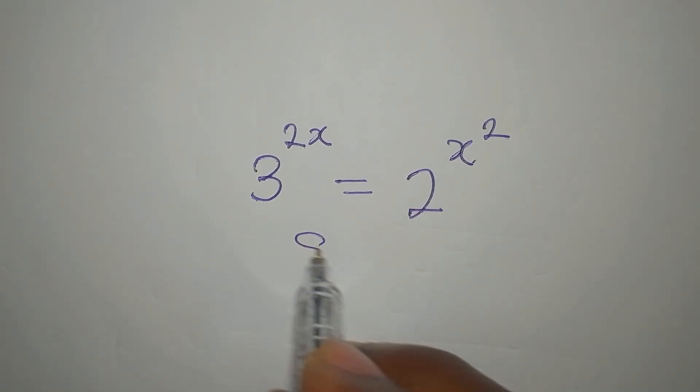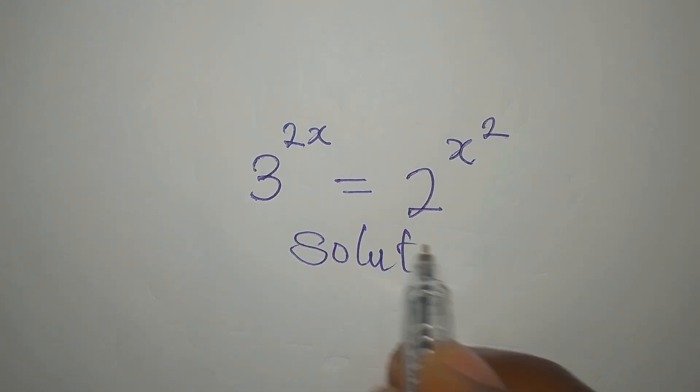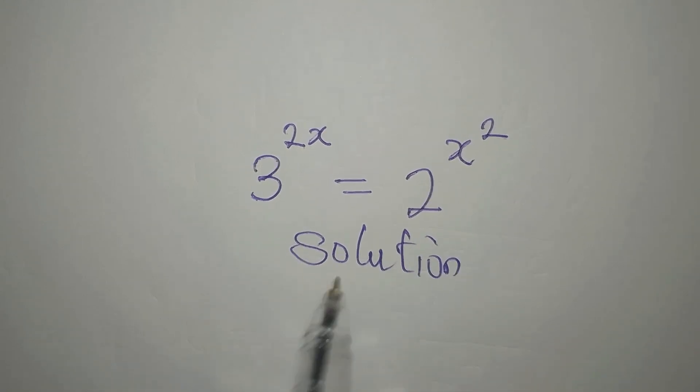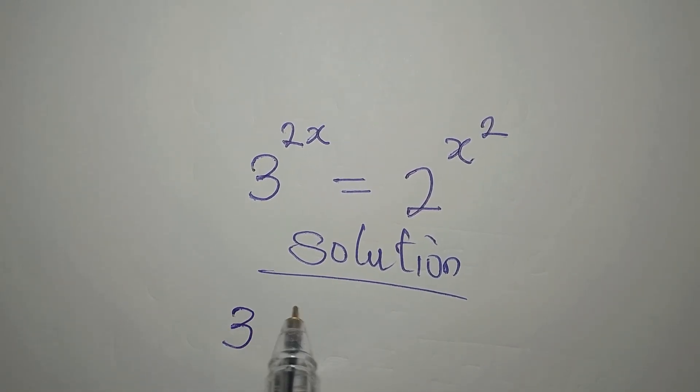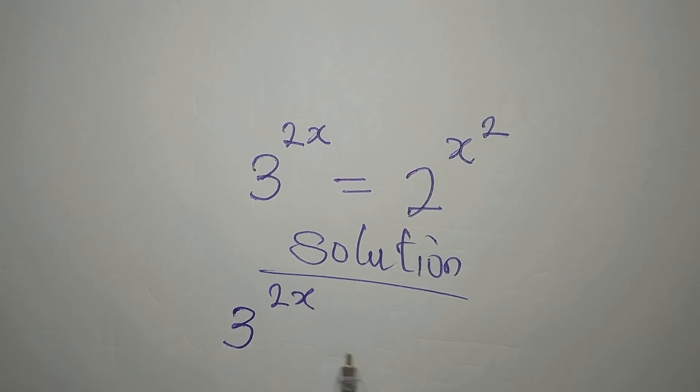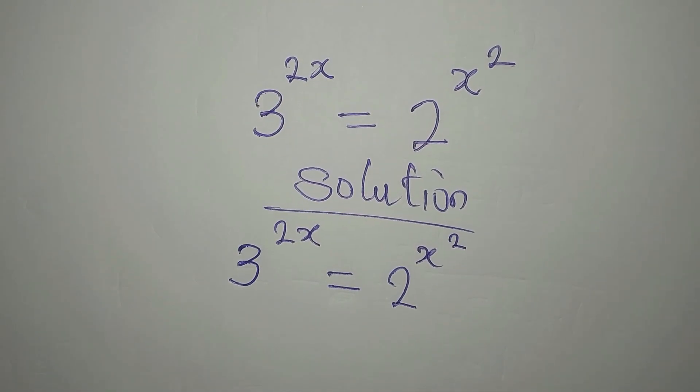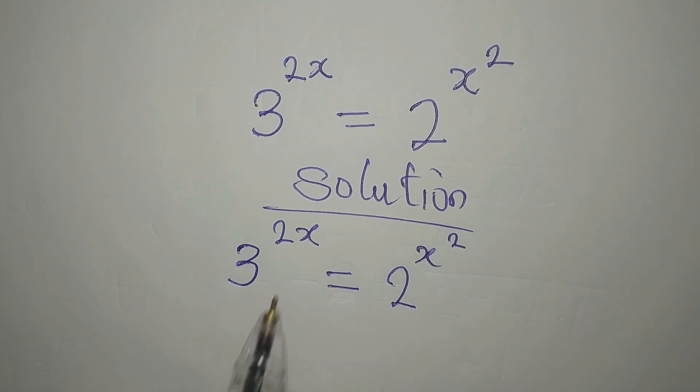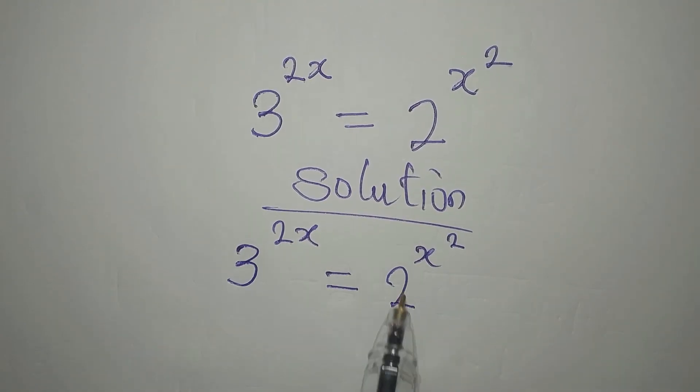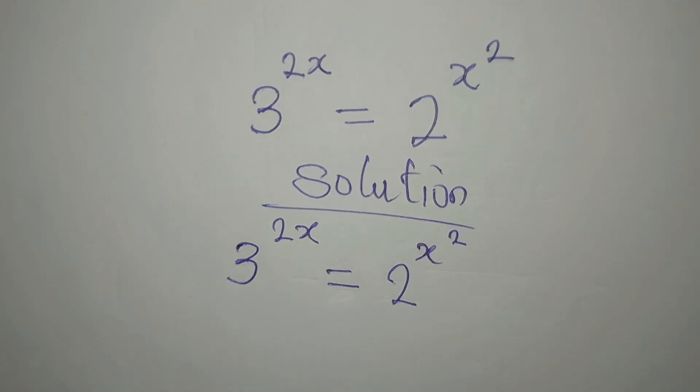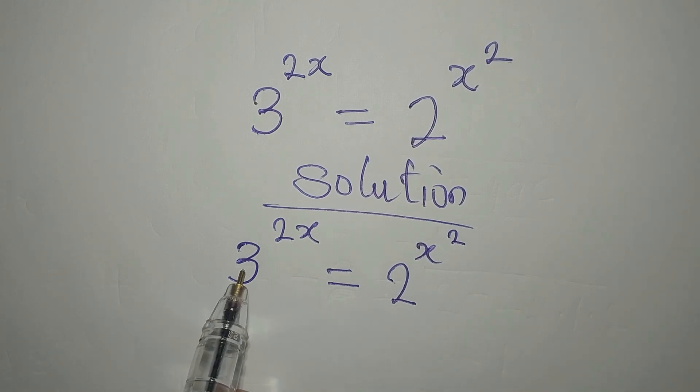Hello everyone, let's provide the solution to this problem: 3 to the power of 2x equals 2 to the power of x squared, and we want to find the value of x. Now that we cannot express this in this form or express this in this form so they can have the same base, what should we do?